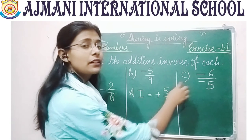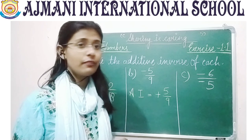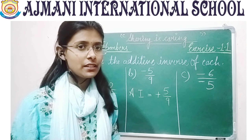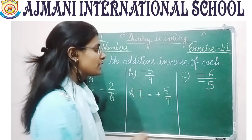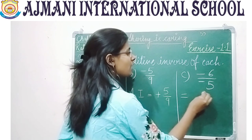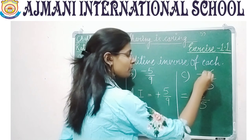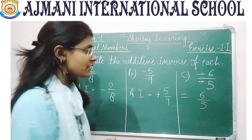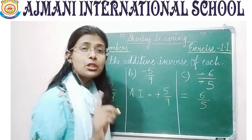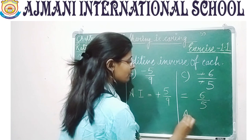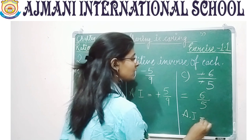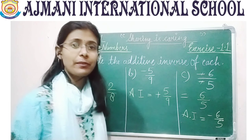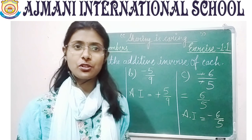Let's see the third part: minus 6 by minus 5. Can you tell whether it is positive or negative? This is actually a positive rational number because the two minus signs cancel each other, giving 6 by 5. So the additive inverse of minus 6 by minus 5 would be minus 6 by 5, which is negative in nature. Try to do the further questions on your own.